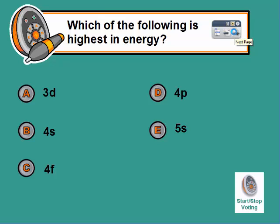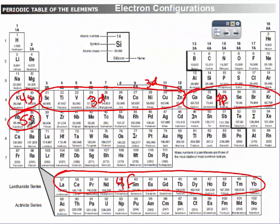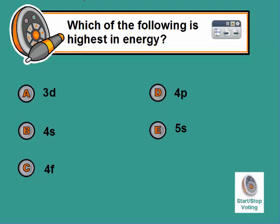I'm going to pause the video and figure out which of these is the highest in energy. Here's where all the electrons are located. So we have 4s, 3d, 4p, 5s, and 4f. Notice 4f would be the last one we come to by quite a lot. So 4f must be the highest in energy.